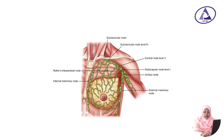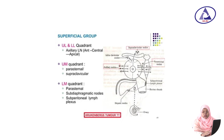Another picture shows the supraclavicular, subclavicular, central lymph node, subscapular lymph node, axillary lymph node, external mammary lymph node, Rotter's interpectoral lymph node, and internal mammary lymph node. The breast is divided into four quadrants: the upper lateral and lower lateral quadrants drain into the axillary lymph node, then to the anterior lymph node, then central, then apical lymph node. This is the route of drainage.